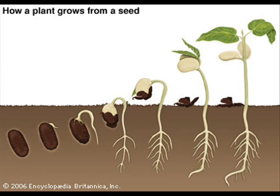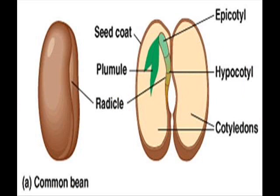A seed is basically a kernel that encloses in itself a small embryonic plant, covered by a hard seed coat and some stored food, that upon receiving the appropriate climate conditions will promote growth. The seed is the ripened ovule or egg — the fertilized product of gymnosperm and angiosperm plants.